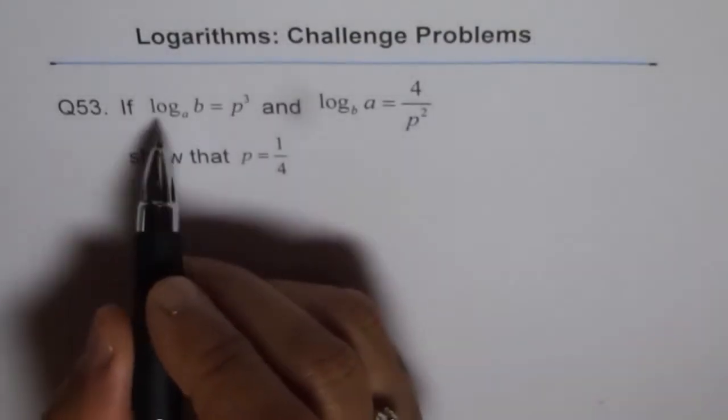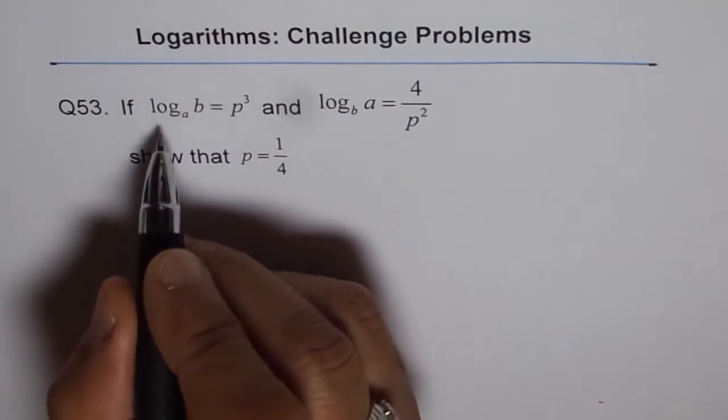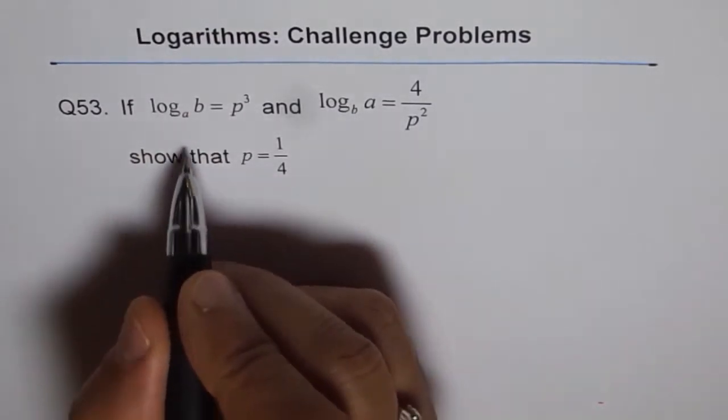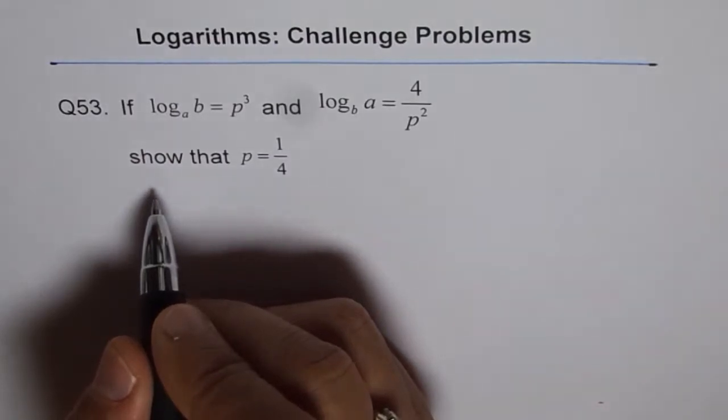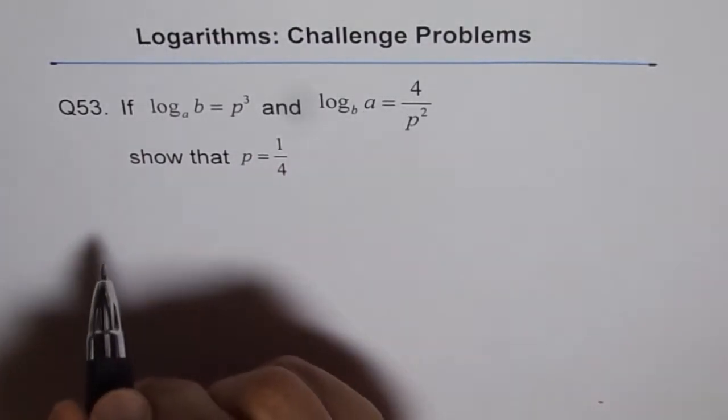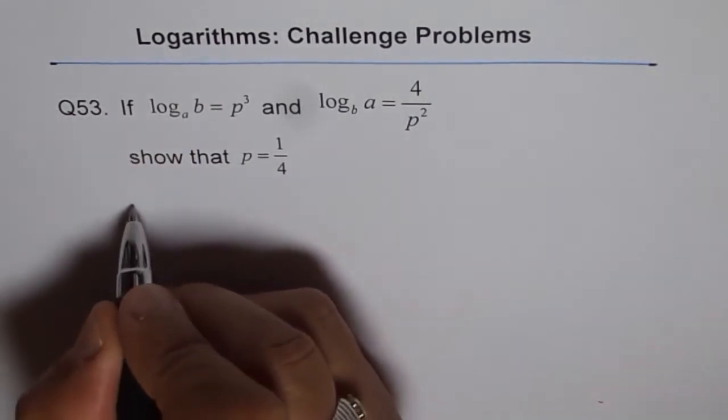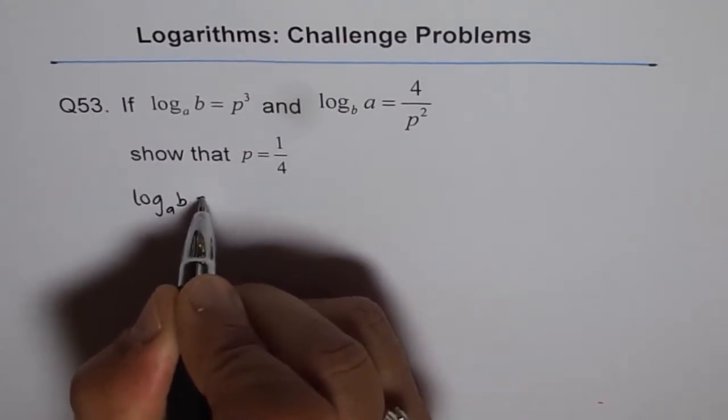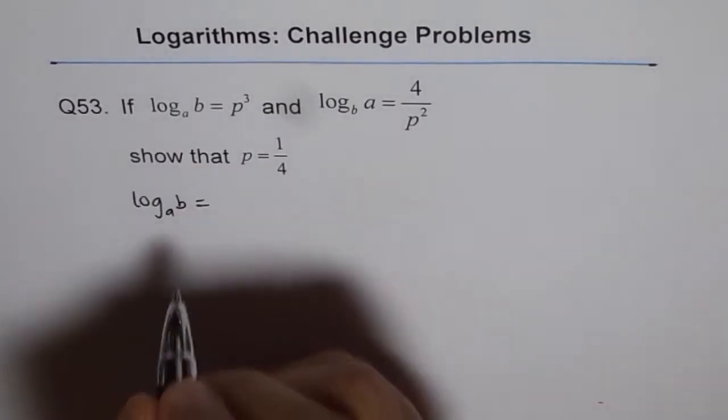When we say log A of B equals P cubed, then what is log B of A? Because this is given in B over A, let's figure out if A over B. So we'll start like this.